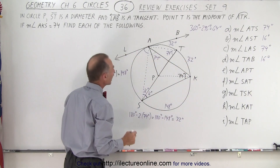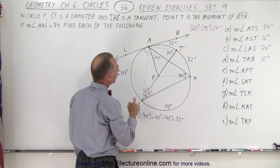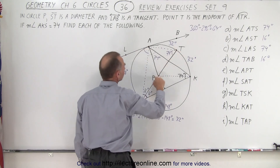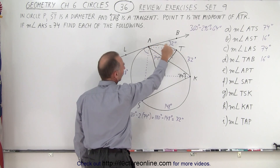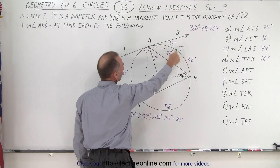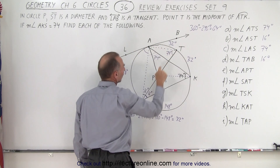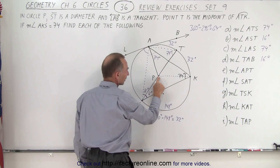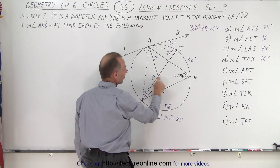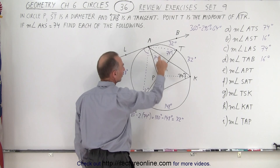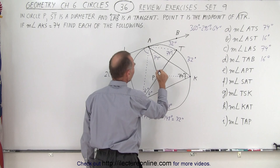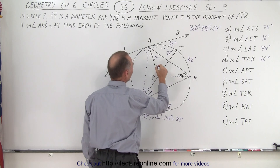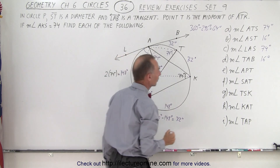For angle APT, from A to P to T: notice the arc length here is 32 degrees, but point P is the center of the circle. When the vertex is at the center, the central angle equals the arc measure, so angle APT must also be 32 degrees.